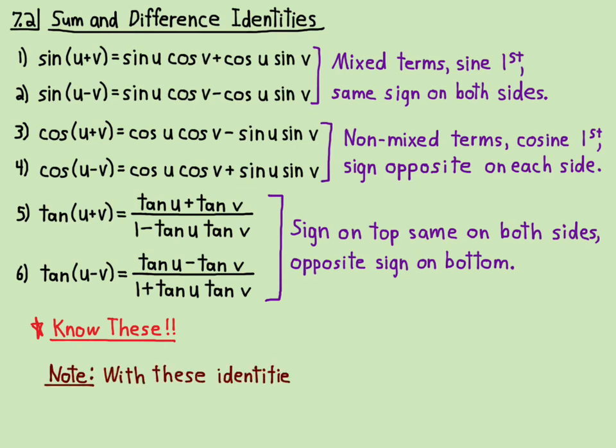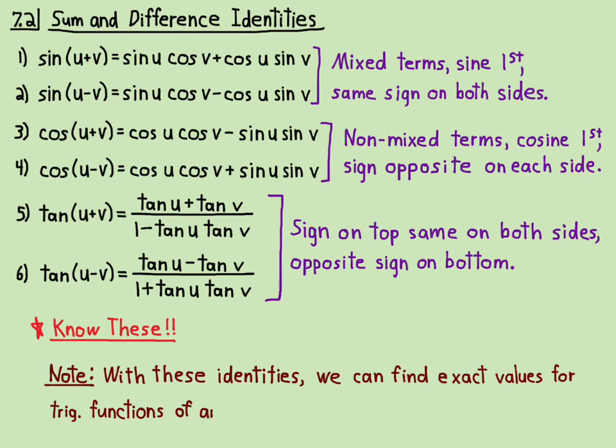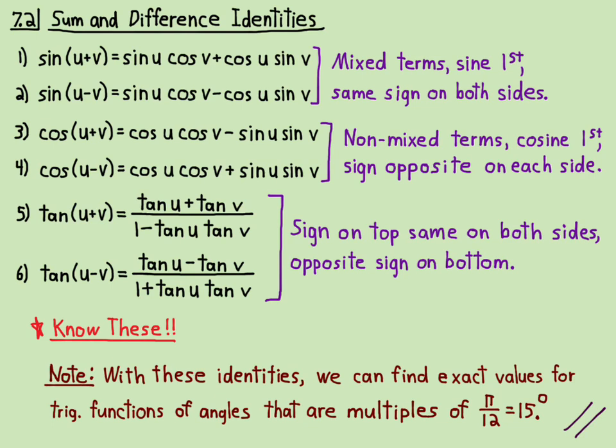With these identities, we can find exact values — not approximations, not rounded off — but exact values for trig functions of angles that are multiples of pi over 12, which is 15 degrees. You take 45 degrees minus 30 degrees: the 45-45-90 triangle and the 30-60-90 triangle are our standard simple triangles for exact values. Using the difference formula, 45 minus 30 is 15, giving us sine and cosine — and from there all the trig functions — for pi over 12 or 15 degrees.